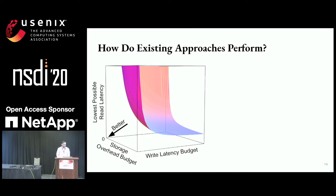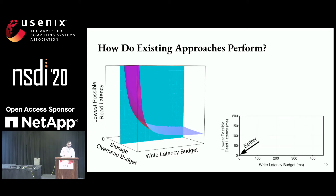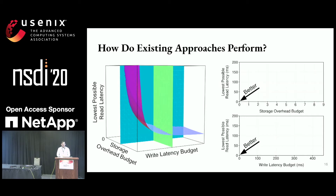Three-dimensional trade-offs are difficult to reason about, so I'm going to take two slices of this space. First, I'll fix the storage overhead budget and vary the amount of write latency we're willing to incur. Secondly, I'll fix the write latency budget and vary the storage overhead budget, computing in both cases what the lowest possible read latency is. Down and to the left is better for both figures.